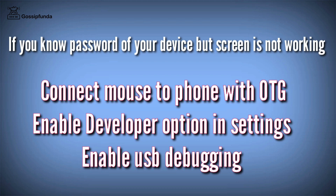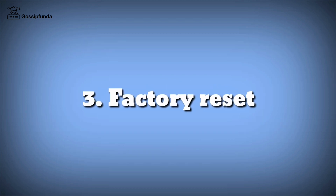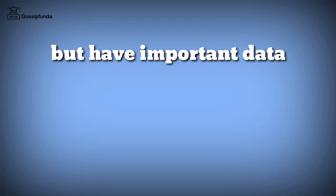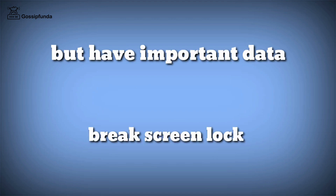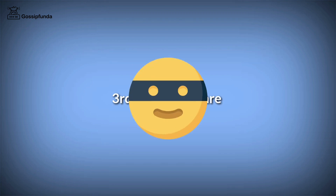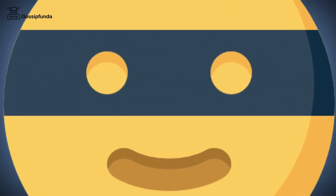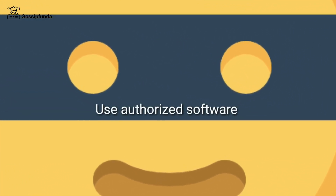If you don't know the password, then factory reset your device and then enable USB debugging. But if your data is important to keep, then you have to break your screen lock with third-party software. There are many software available to do this, but using third-party software is quite risky, so try to use software which requires purchase and is authorized.